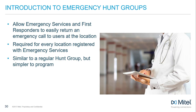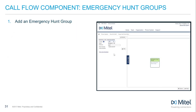This location-based emergency hunt group is used to route return calls from emergency services to a set of My Cloud Connect users at this location, so it should only consist of users at the assigned location. To add an emergency hunt group, select Add Emergency Hunt Group from the drop-down list.